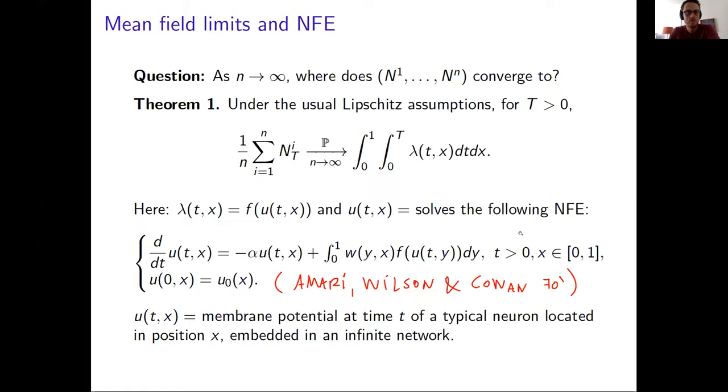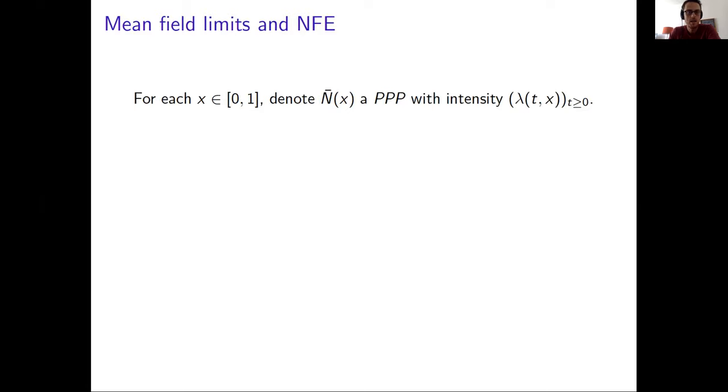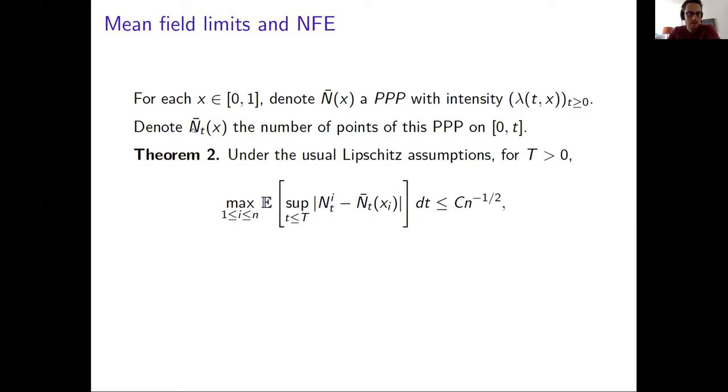So for each x, if I denote n_bar of x as a Poisson process with intensity lambda(t,x), and I denote n_bar(t) as the number of points of these processes on zero t, we can also show that if I compare the number of points of my Hawkes processes at each possible time and for each neuron, we can show that this goes to zero as one over square root of n. So in some sense, we are approximating our Hawkes processes by a family of non-homogeneous Poisson point processes with this intensity lambda(t,x).